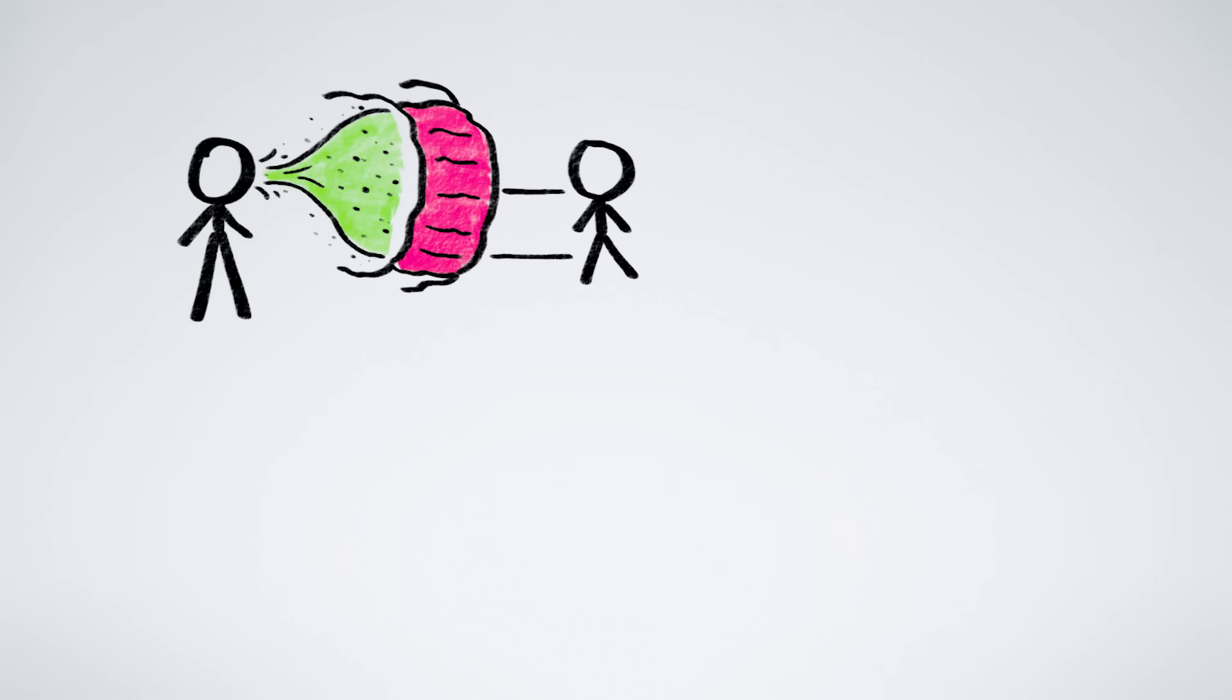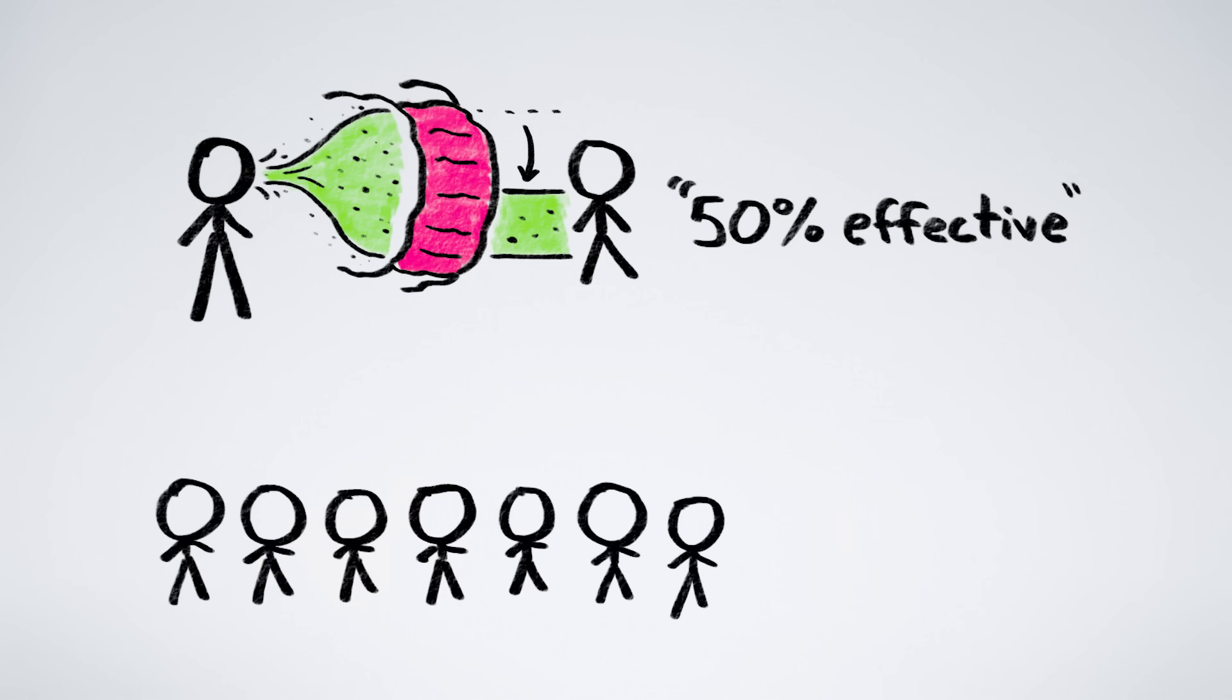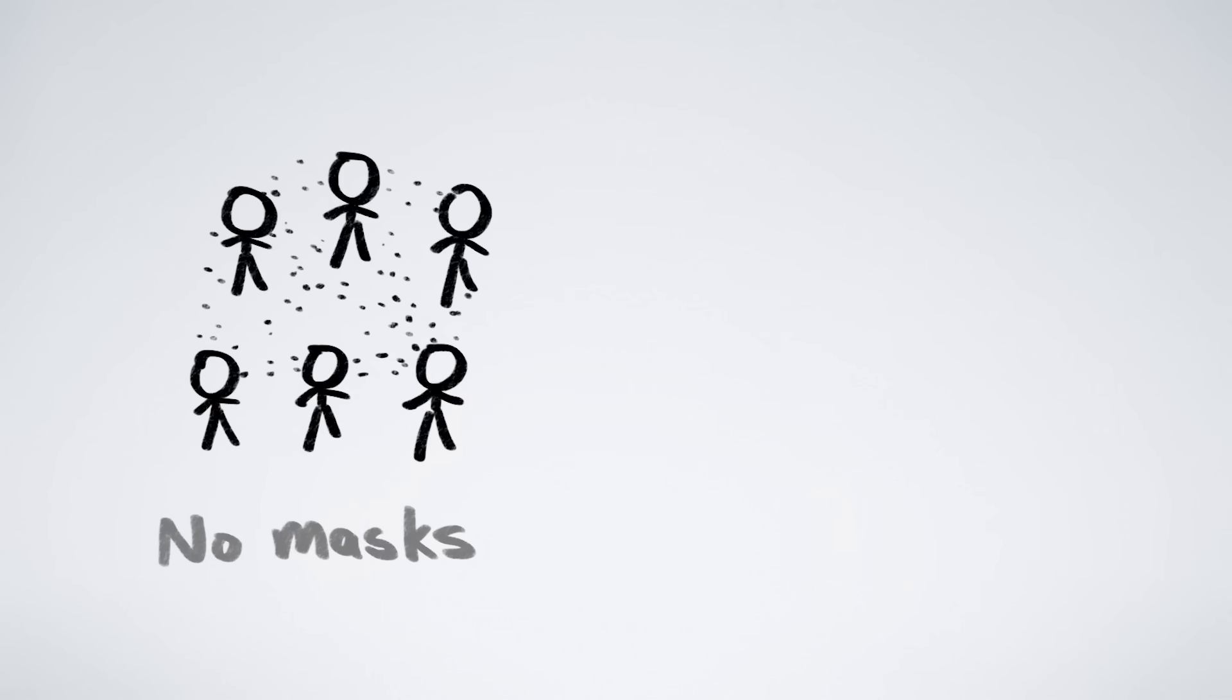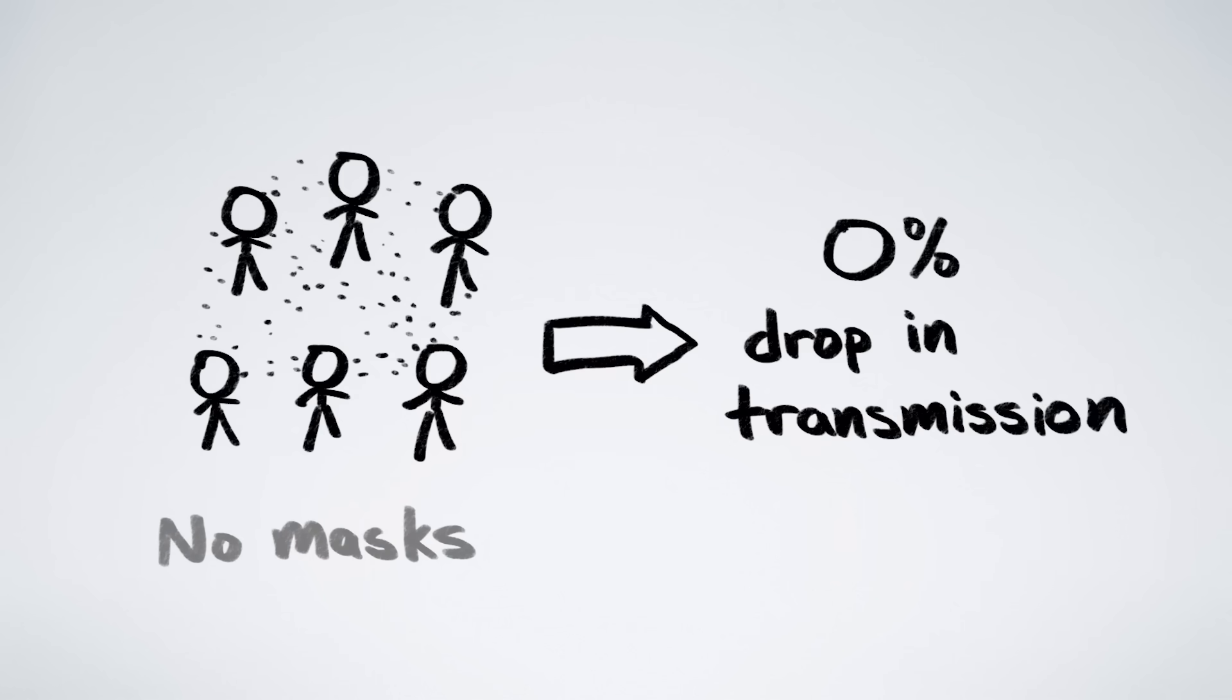Say you have a mask that cuts in half the chance a contagious person will infect a nearby susceptible person. In other words, this mask is 50% effective. Except, this mask is way more than 50% effective, because as we'll see, when many people wear even just a 50% effective mask, you end up with way more than 50% protection. It seems obvious that if no one wears a mask, then no one gets any benefit. And that's true.